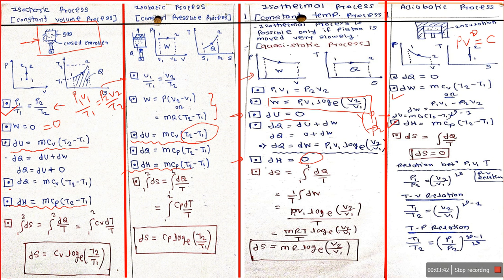For heat addition: isochoric — mcv·ΔT, since heat addition takes place at constant volume, cv is used. Isobaric — mcp·ΔT, since heat addition takes place at constant pressure, cp is used. For isothermal, dQ equals zero plus work done, meaning all the heat added is entirely utilized for work done — there is no change in internal energy at all. This is very important.